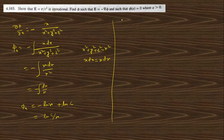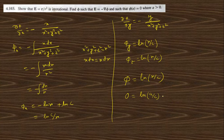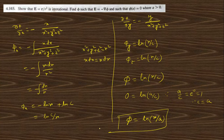Similarly, ∂φ/∂y = −y / (x² + y² + z²), giving φ_y = ln(r/c₂). And φ_z = ln(r/c₃) by the same process. So φ = ln(r/c). Applying the initial condition φ(a) = 0: 0 = ln(a/c), so a/c = 1, meaning c = a. Therefore, the final answer is φ = ln(r/a).